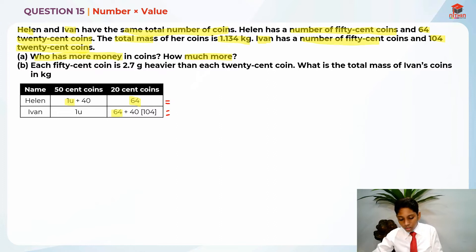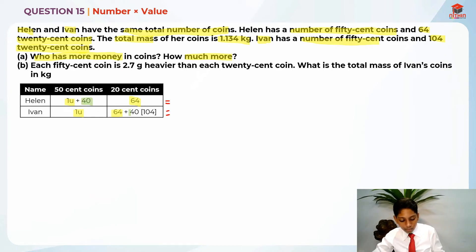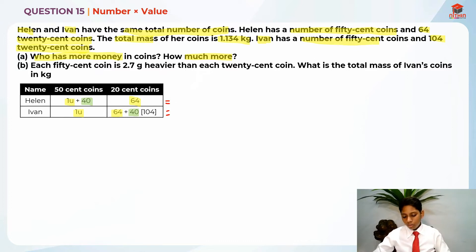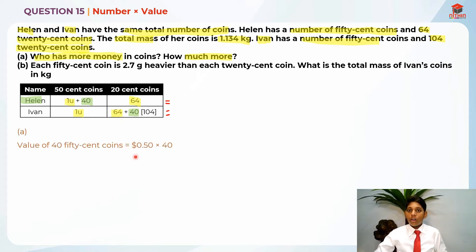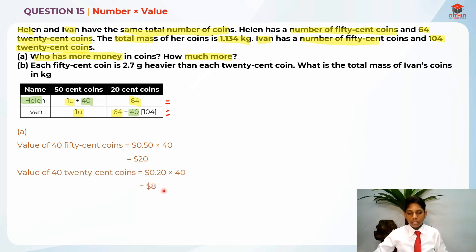The two 1-unit values are actually the same. The only difference is 40 fifty-cent coins versus 40 twenty-cent coins. Since 50 cents is more than 20 cents, Helen has more money. To find how much more: value of 40 fifty-cent coins = $0.50 × 40 = $20. Value of 40 twenty-cent coins = $0.20 × 40 = $8. So the difference is $20 − $8 = $12.